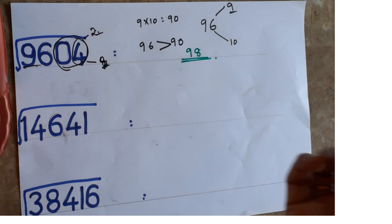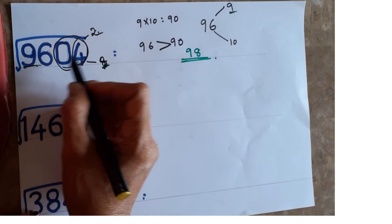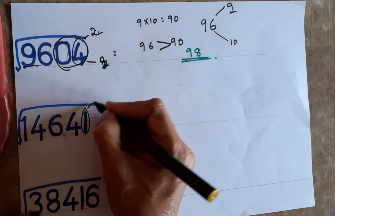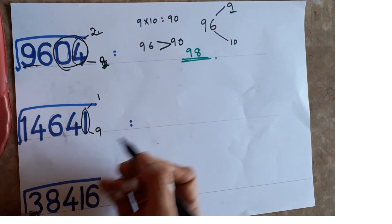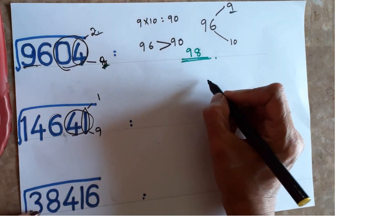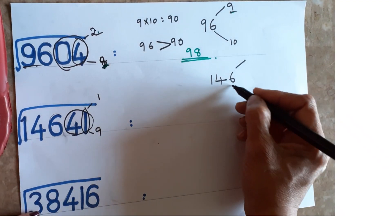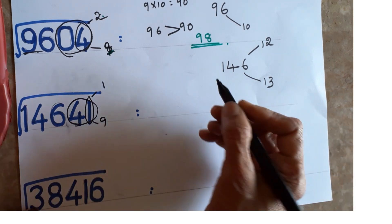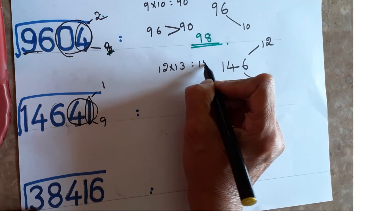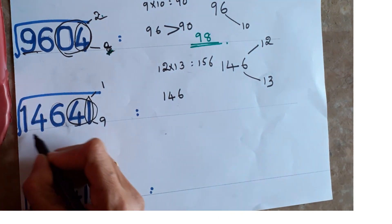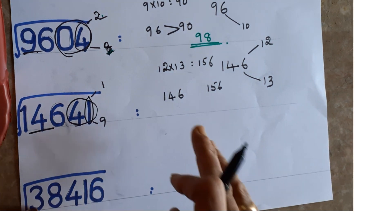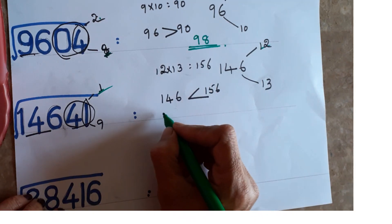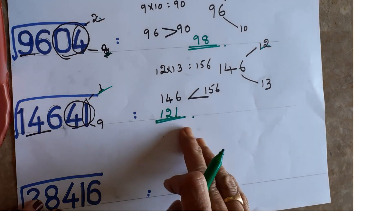If you understand the concept it is very easy — within seconds you can do it. Square root of 9604 = 98. Next: square root of 14641. Units place is 1 — either 1 or 9. Eliminate two digits — remaining is 146. Nearest squares: 12 squared is 144, 13 squared is 169. Multiply 12 times 13 = 156. Base number is 146. Is 146 less than 156? Yes — less means take the before number, which is 12. Answer is 121.